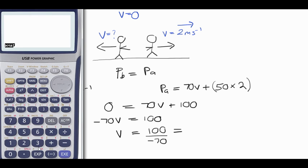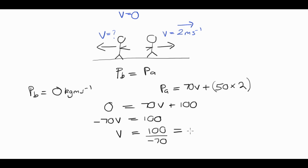Using the calculator, 100 divided by negative 70 gives us a velocity of 1.43 meters per second. So negative 1.43 meters per second - that negative sign tells us the velocity is to the left. It's 1.43 meters per second to the left.